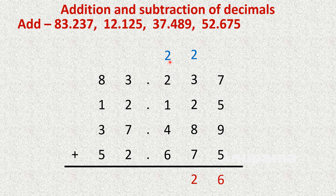Then the tenths column: 2 plus 2 is 4, plus 1 is 5, plus 4 is 9, plus 6 is 15. We write 5 here and carry 1. Then we write the decimal point.